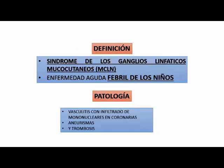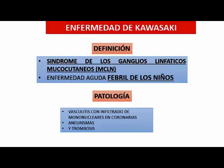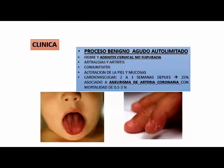Ahora vamos con Kawasaki, vasculitis de vasos medianos. La enfermedad de Kawasaki es un síndrome de los ganglios linfáticos mucocutáneos. Es una enfermedad aguda febril de niños fundamentalmente. Es una vasculitis con infiltrados mononucleares en coronarias, bastante rara, produce aneurismas y trombosis. Es una enfermedad de vasos medianos con una alta mortalidad. En el síndrome de Kawasaki: fiebre, adenitis, artralgias, conjuntivitis. Afecta fundamentalmente ganglios linfáticos mucocutáneos y tiende a producir mucha fiebre, adenitis cervical no supurada, artritis, conjuntivitis, alteración de piel y mucosas.